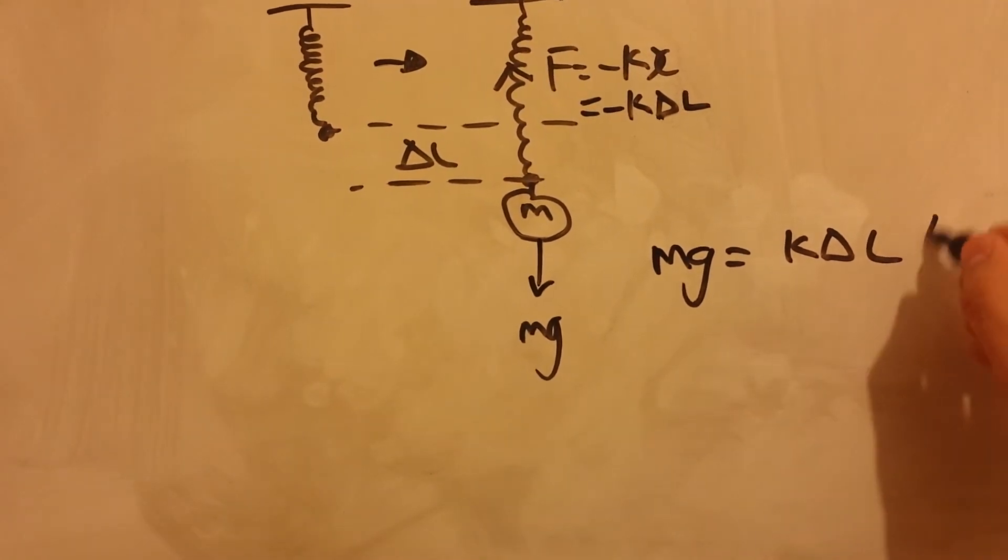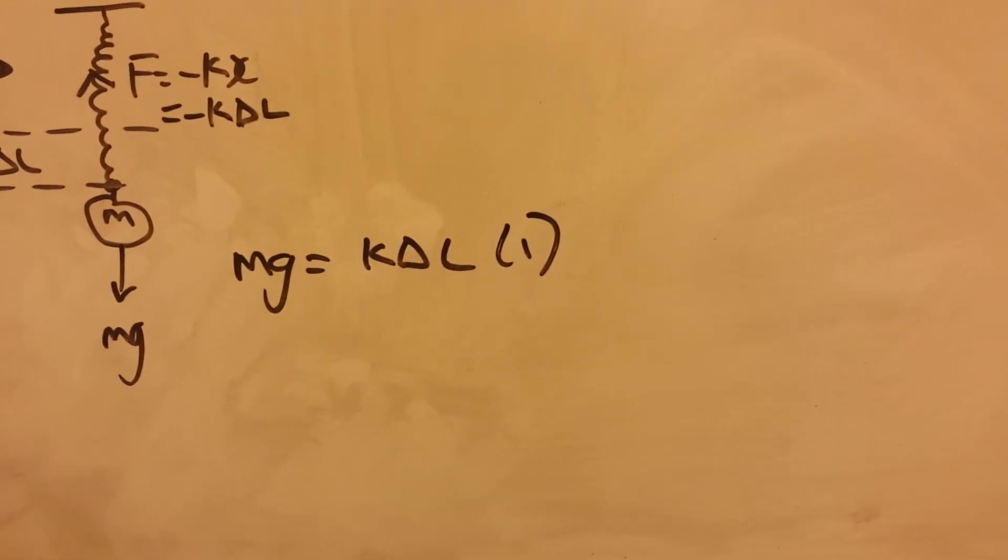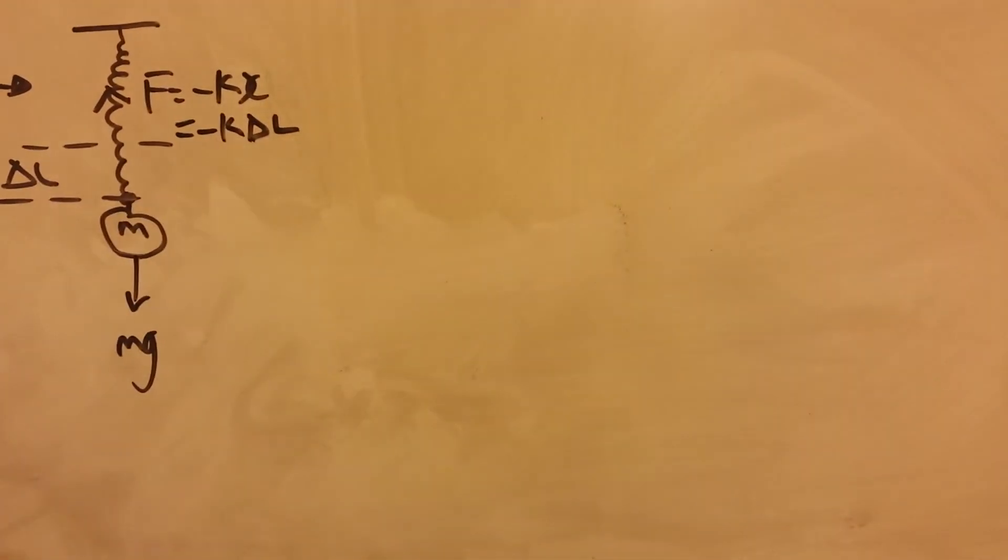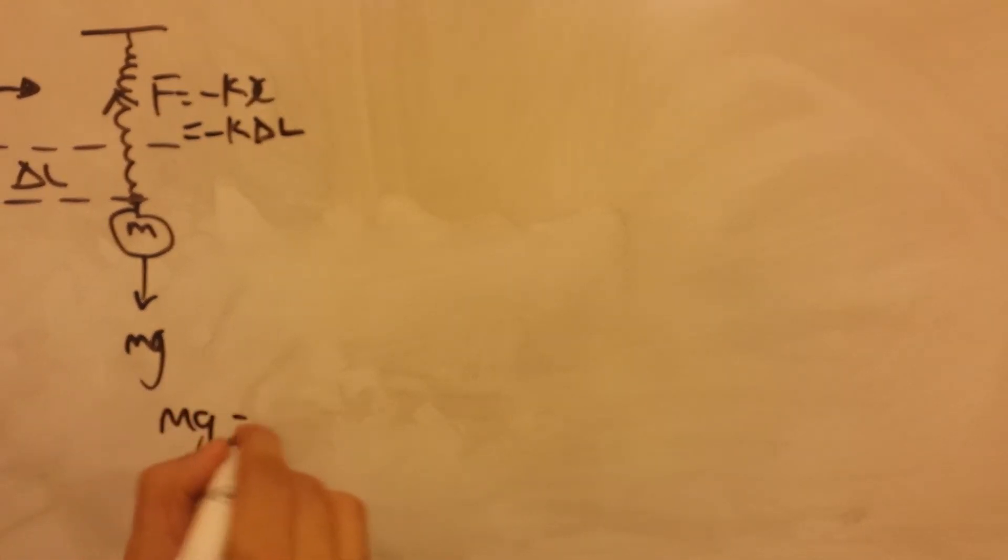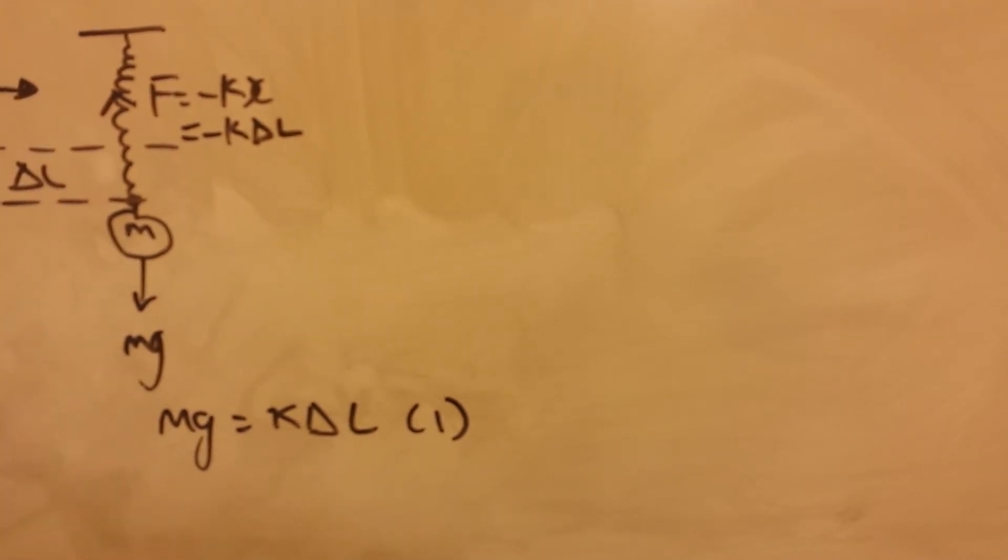And let's label that as equation one. Because we will be using that. So it's equilibrium position, and so the resultant force is equal to zero, and so these two forces that's acting against each other must be equal to each other.